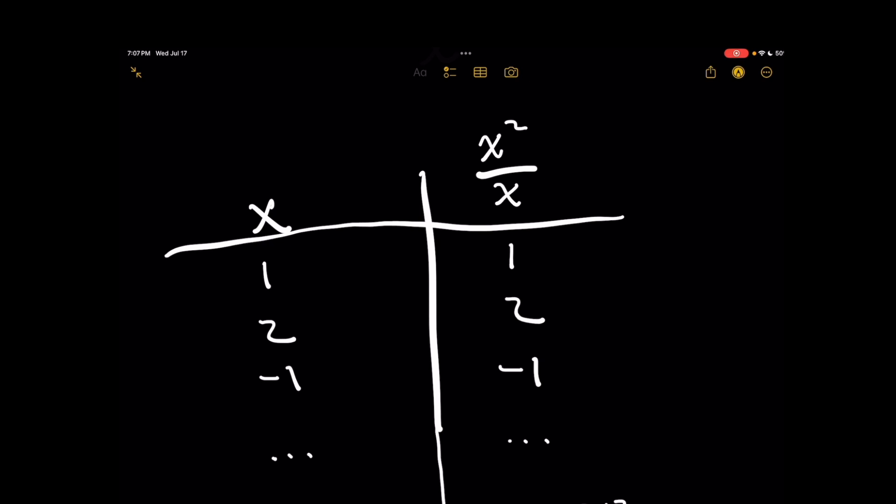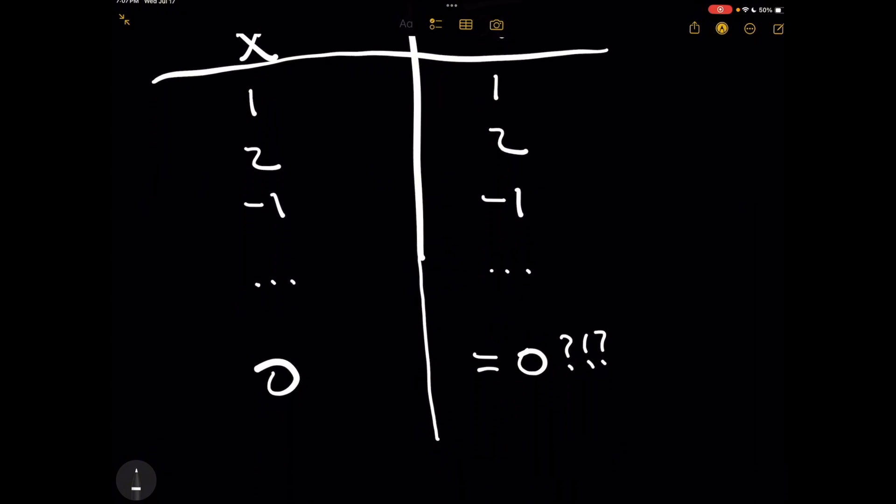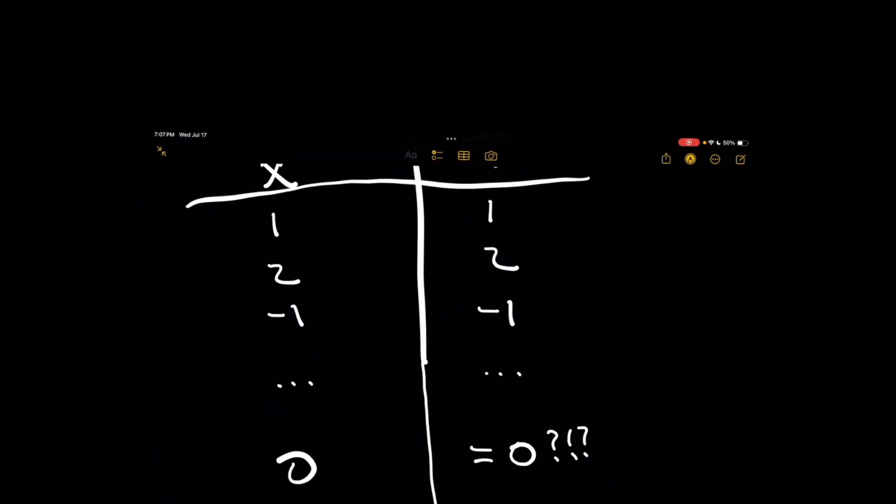But I want you to explore the edge case of what happens when x equals 0. If you were to plug in 0 into the expression as is, you would get 0 squared over 0. So the question for you then is, does 0 happen to be the case for what x squared over x equals? Think about it, leave a comment, tell me what you think.